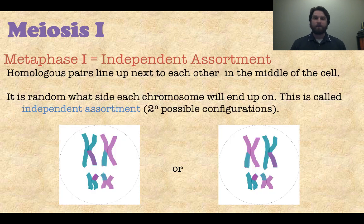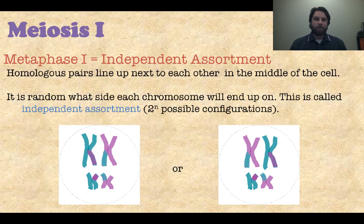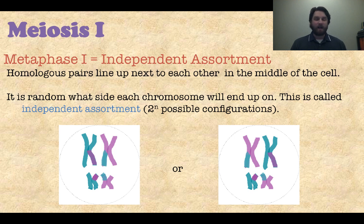After prophase is metaphase I, and the main thing that happens here is something called independent assortment. Those homologous chromosomes that have crossed over line up in the middle on the metaphase plate, but they can line up in two different ways — one chromosome can be on the left, or the other one can be on the left. So there are two possible arrangements for each chromosome pair. In this example with only two chromosomes, there are four different arrangements — two to the power of two. Humans have 23 pairs of chromosomes, so the number of configurations through independent assortment is two to the 23rd power — tons and tons of different combinations, which is one reason we have so much variation in humans.